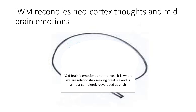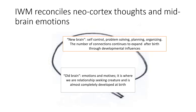The old or midbrain is almost completely developed at birth. It deals with emotions, motives and long-term memory. It is where we are social relationship seeking creatures. The new brain or neocortex deals with self-control, planning, fluid intelligence and working memory.